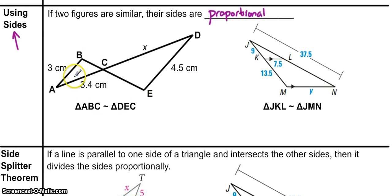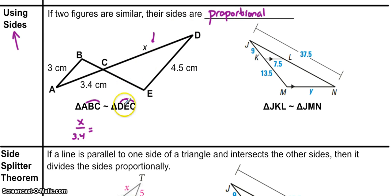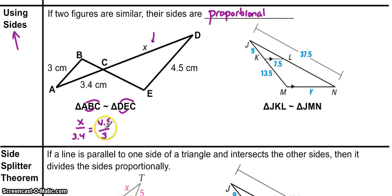Let's see how this works in this first problem. We have the same triangle similarity statement: triangle ABC is similar to triangle DEC, and we're asked to find how long X is from C to D. We know that X corresponds to C to A, which is 3.4 centimeters. D to E is 4.5 centimeters in the larger triangle, and that corresponds to AB, which is 3 centimeters. So we have the ratio X over 3.4 equals 4.5 over 3.